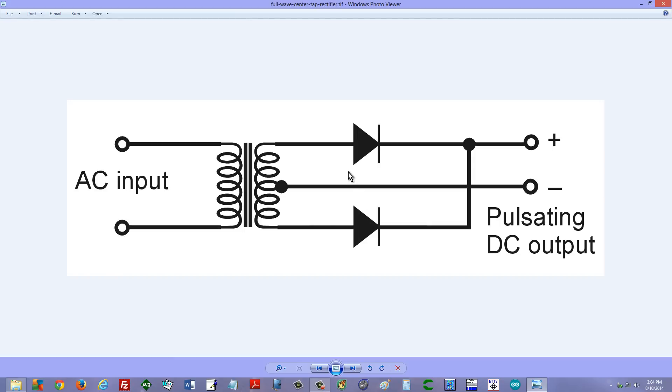But these diodes, what they do - remember a diode will allow electrons to pass only against the arrow. If electrons try to flow with the arrow, then it won't let them go.